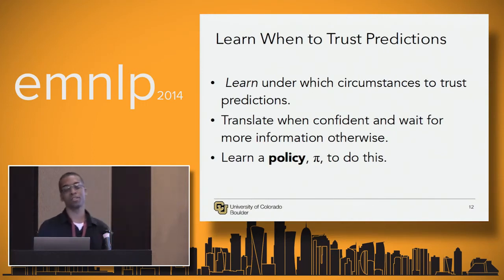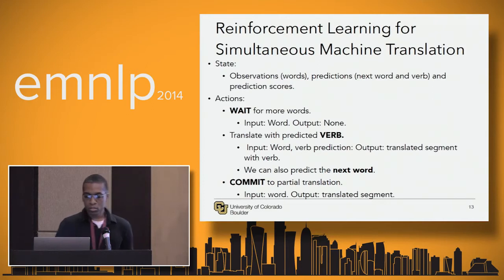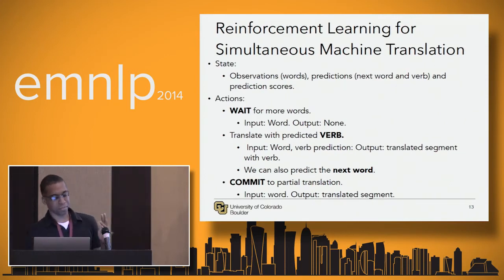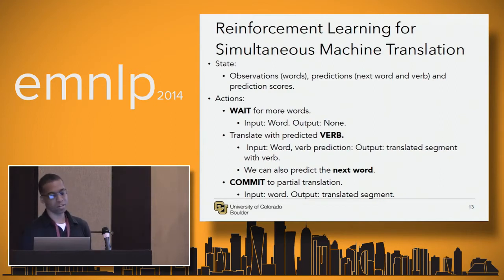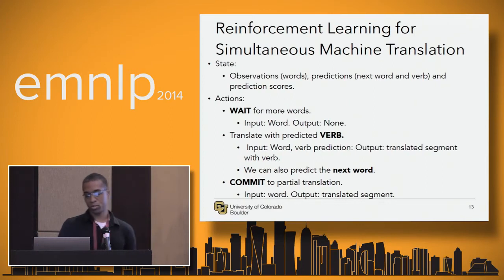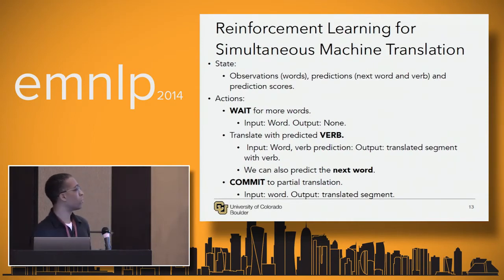We want to learn under which circumstances we trust these predictions. To do this, we use reinforcement learning and learn a policy called Pi. In reinforcement learning, you have states and you can take actions in those states. In our system, we have observations — the words coming in — and predictions about what the future input will be, most importantly the verb. Our actions are: wait, which does not produce any output; we just wait for more words.